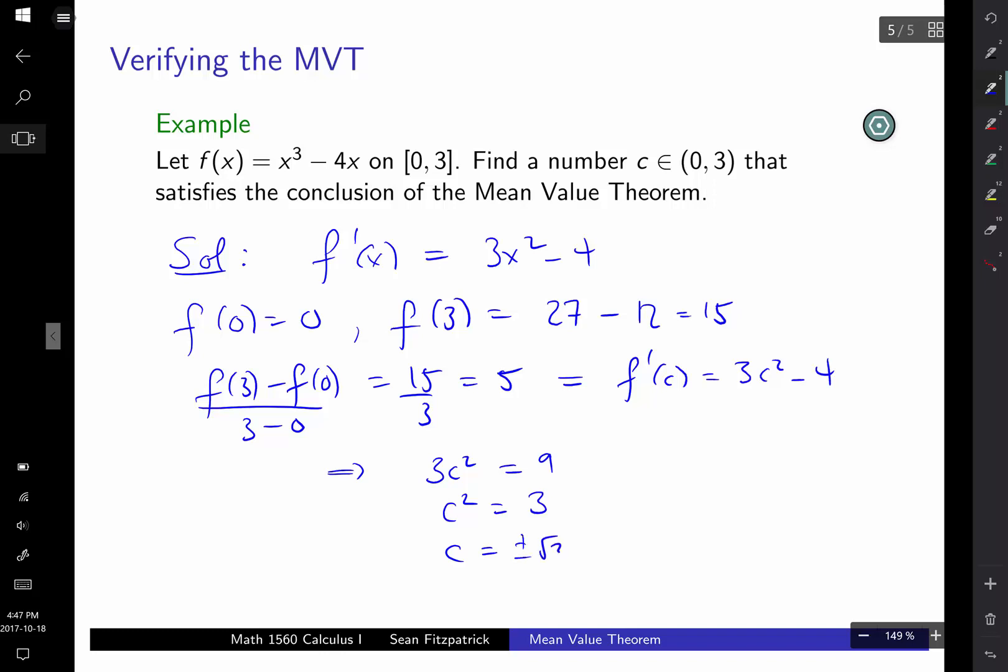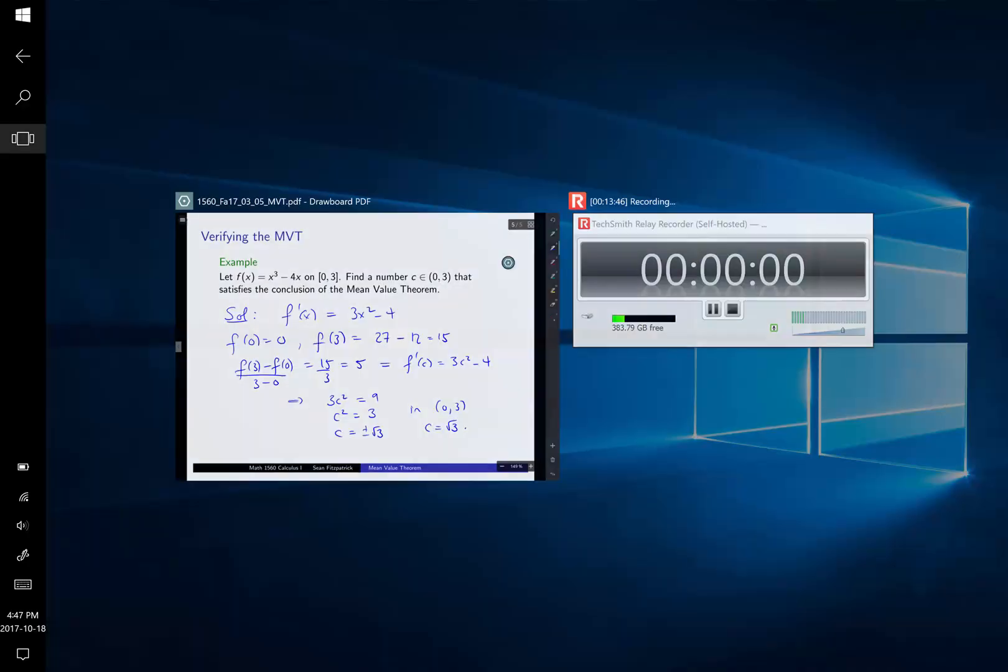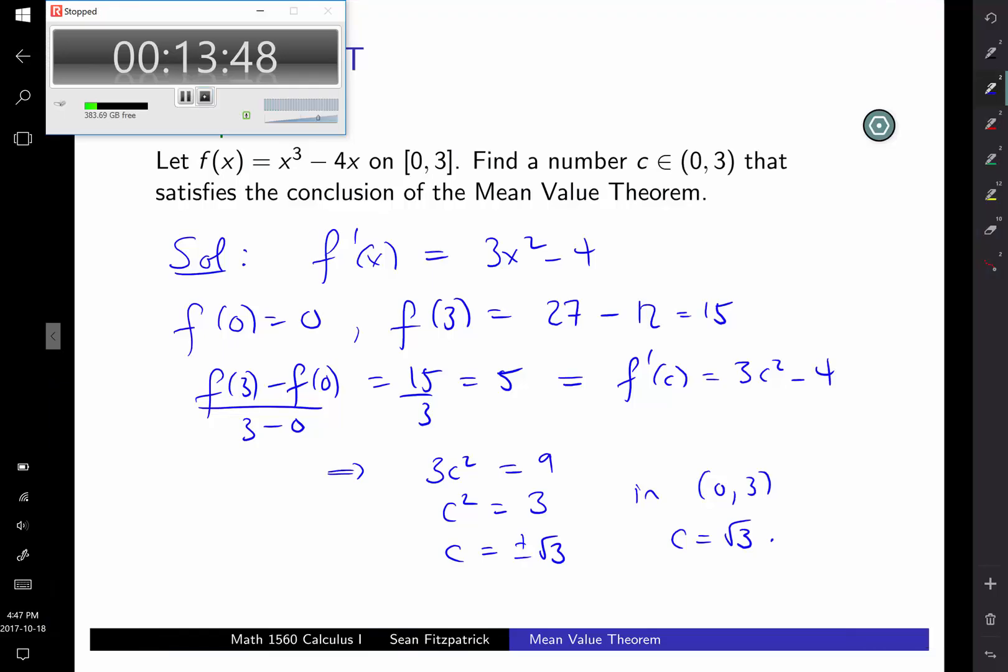So c is plus or minus root 3. That's better. So in (0,3), the value of c that we want is c equals root 3. So with c equal to the square root of 3, we will, in fact, get f'(c) equal to the average rate of change. Yeah. Okay. So good. Okay. Thank you, Amy.